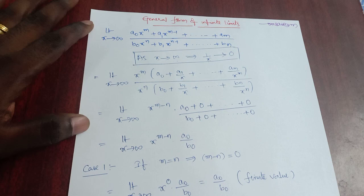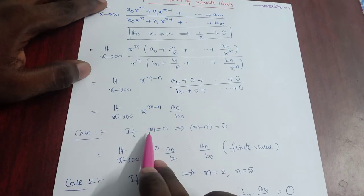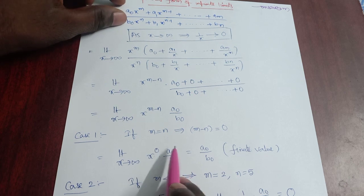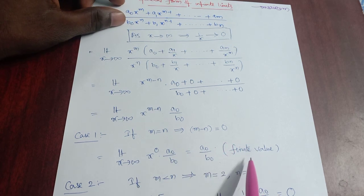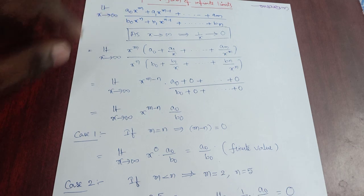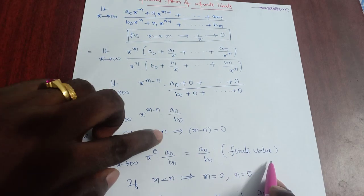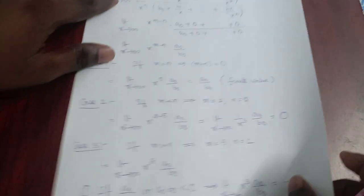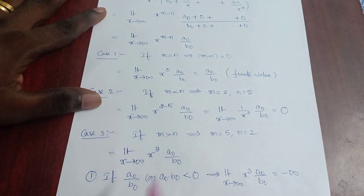It is very clear that if m = n, the limit equals a0/b0, which is a finite value. If the result is finite, clearly m = n. If the result is infinite, clearly m > n.